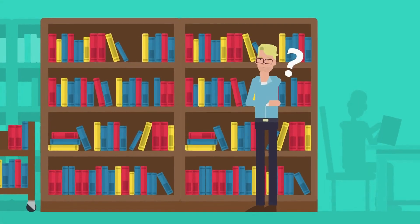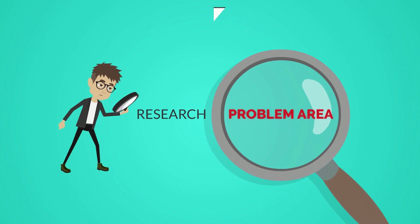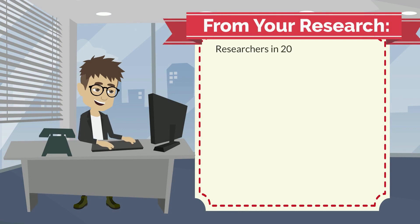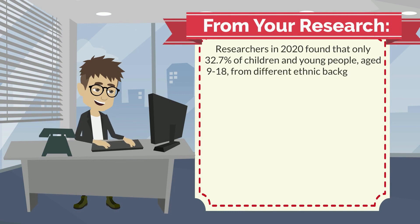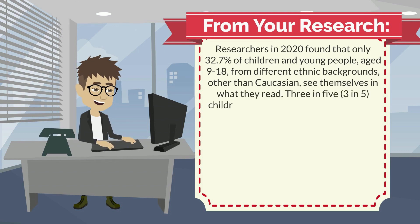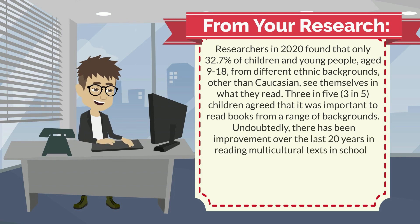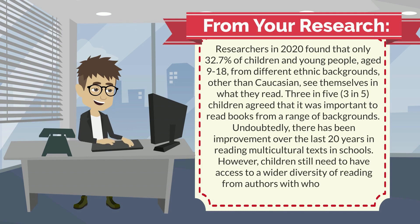Example two: let us assume that you are in education and your major is reading. You have to choose a topic based on an identifiable problem. First, identify a research problem area — for example, reading multicultural texts. From your research, researchers in 2020 found that only 32.7 percent of children and young people aged 9 to 18 from different ethnic backgrounds other than Caucasian see themselves in what they read. Three in five children agreed that it was important to read books from a range of backgrounds. There has been improvement over the last 20 years, however children still need access to a wider diversity of reading from authors with whom they can identify.